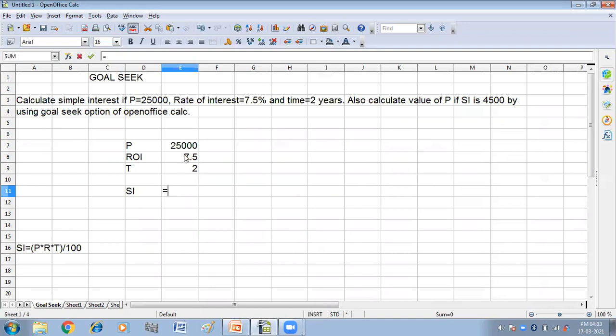That is P into R into time. The formula of the simple interest is principal into rate into time divided by 100.